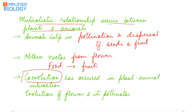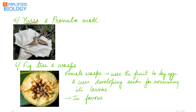There has been co-evolution seen in plant-animal interactions. Evolution has occurred in the flowers and their pollinators, meaning the flowers and pollinators have specifically developed so that they can help each other. For example, the yucca plant and the Pronuba moth.